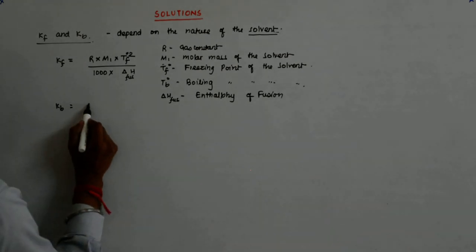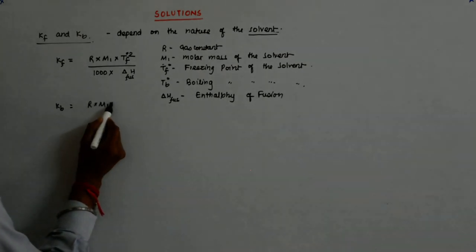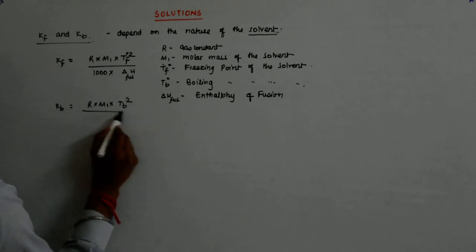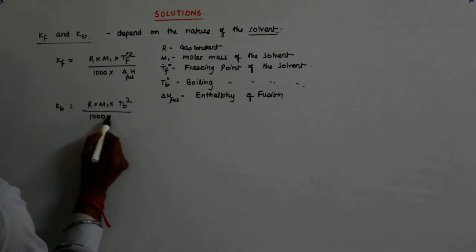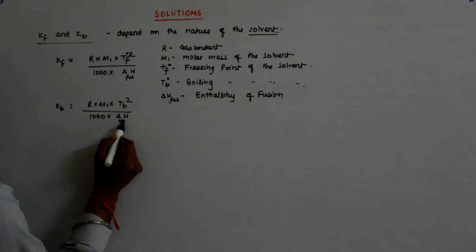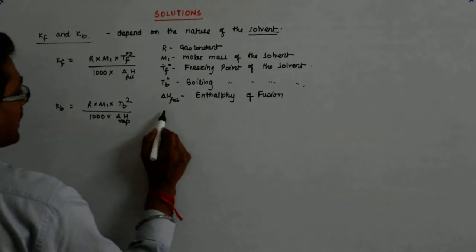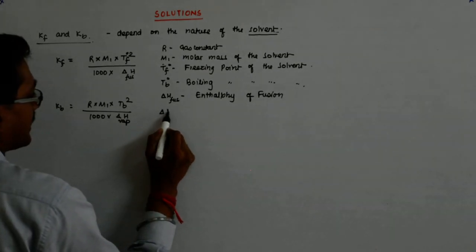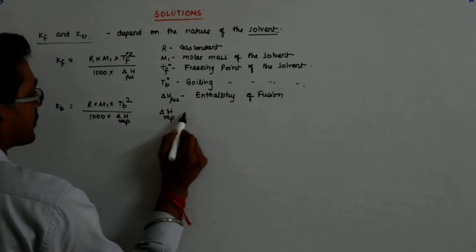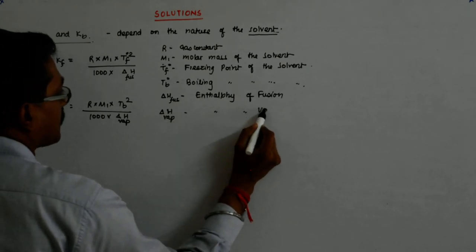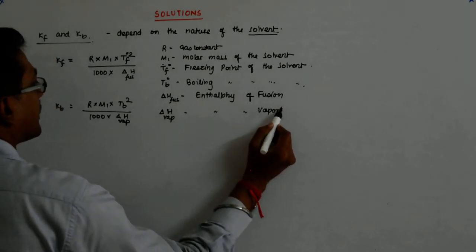Similarly, KB is R into M1 into TB squared divided by 1000 into delta H vaporization, where delta H vaporization is enthalpy of vaporization.